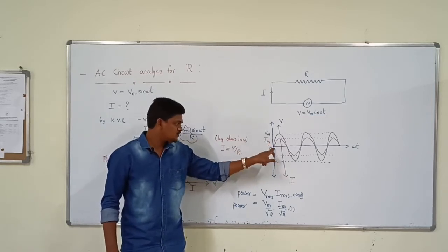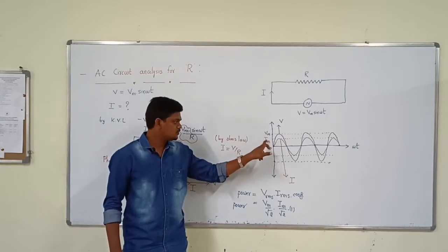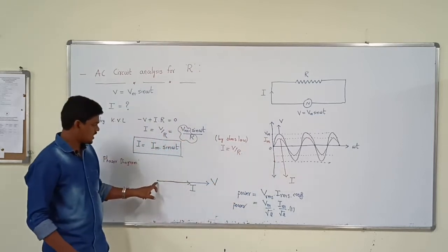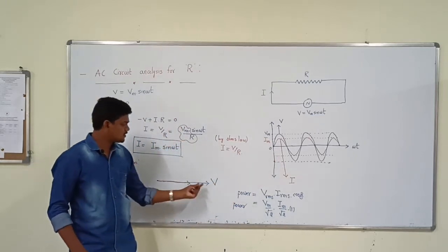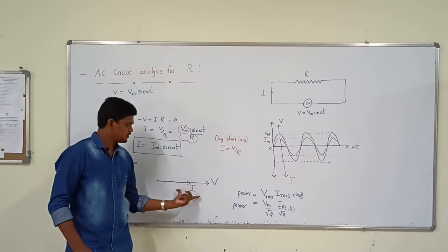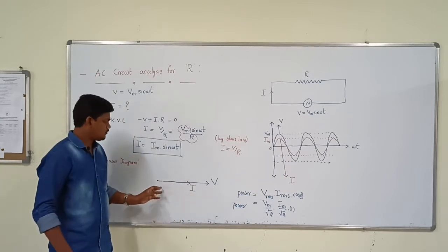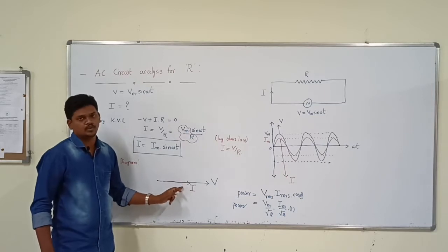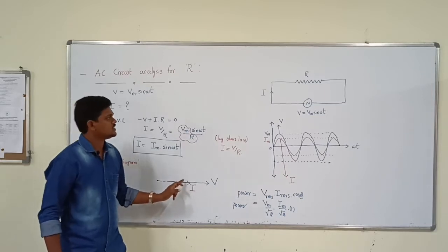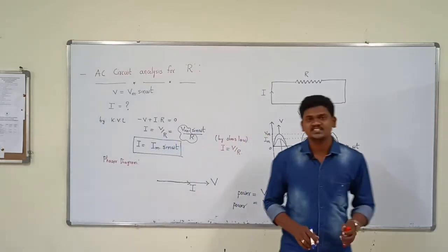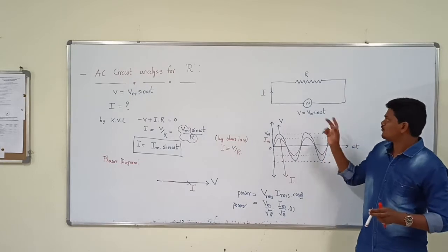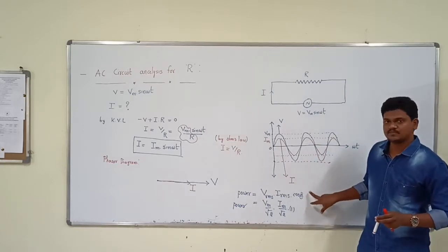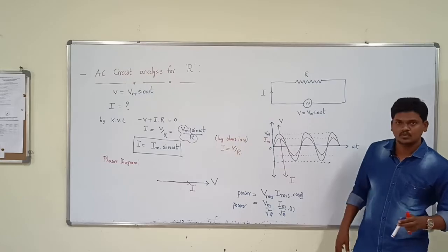By this single phase AC circuit analysis, voltage and current are in the same phase. That is why the voltage waveform starts at 0 and the current waveform also starts at 0. Similarly, in the phasor diagram, voltage is a larger line starting at 0 and current is a smaller line but also starts at 0. This is about single phase AC circuit analysis for the series resistor.